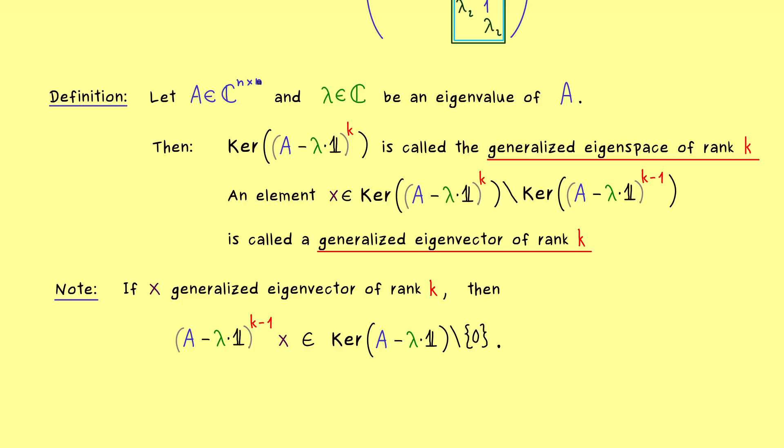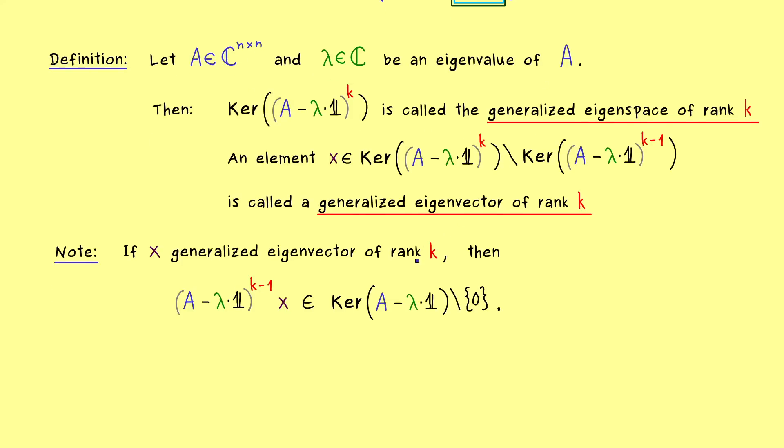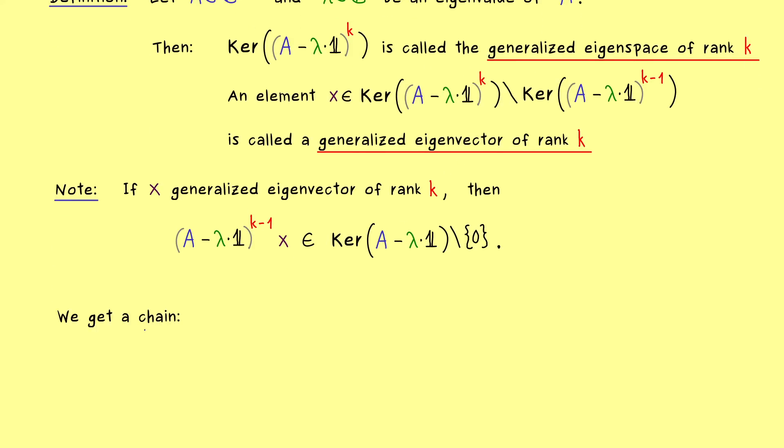Moreover, what we get with the generalized eigenspaces is a whole chain of subspaces. In fact, the subspaces cannot get smaller if we increase the power.